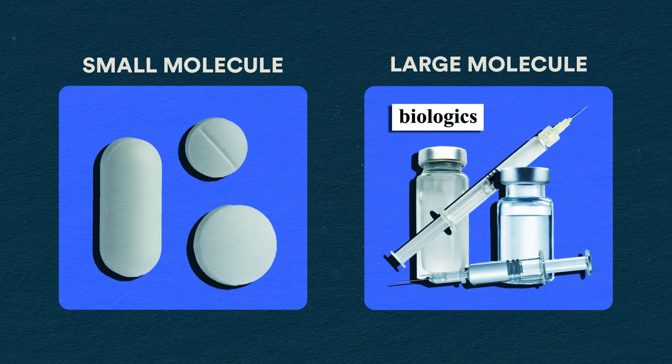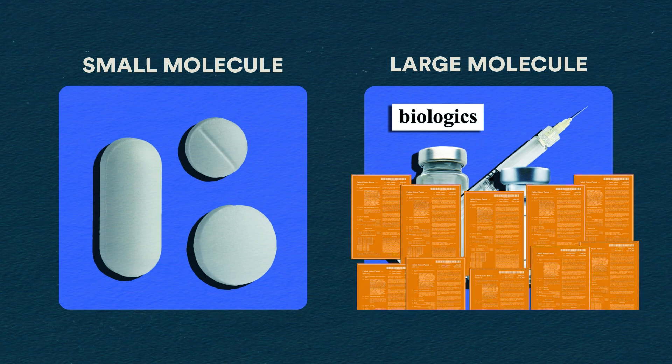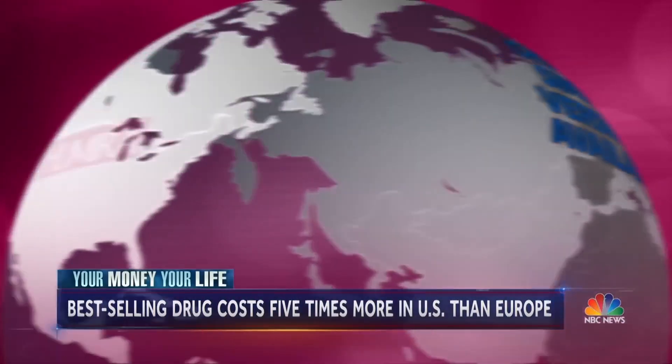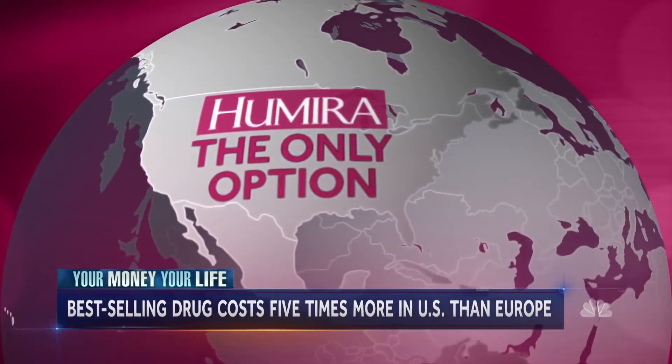Because biologics have complex formulations, there's more opportunity for patent layering, which means biologics often have more patents than small molecule drugs. Let's look at one of the world's top selling drugs to get an example of what this can look like.